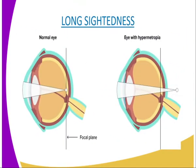We have our second defect of the eye, which is known as long-sightedness. Our diagrammatic representation here is showing a normal eye versus an eye with hypermetropia, which is also known as long-sightedness. These are conditions in which light rays from a near object are not brought to focus by the time they reach the retina.